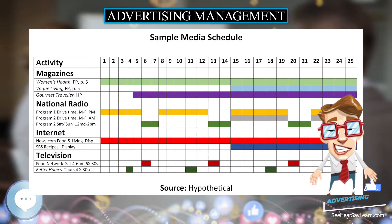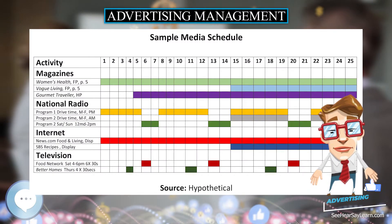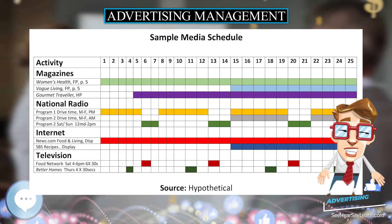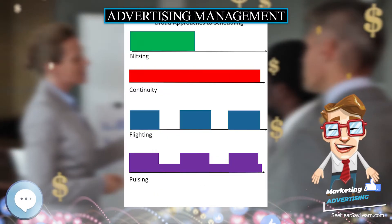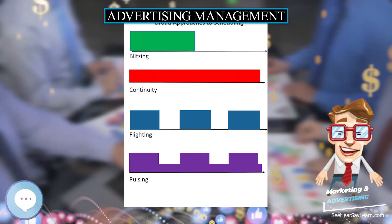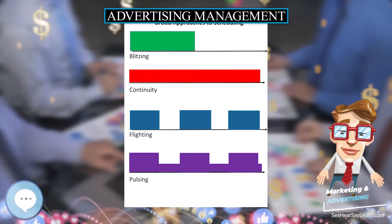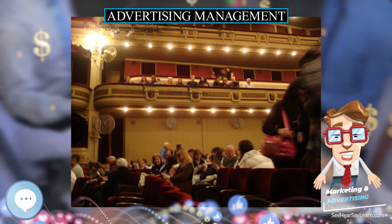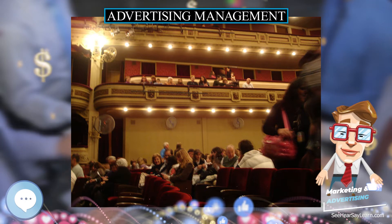Advertising management is a complex process. However, at its simplest level, it can be reduced to four key decision areas.